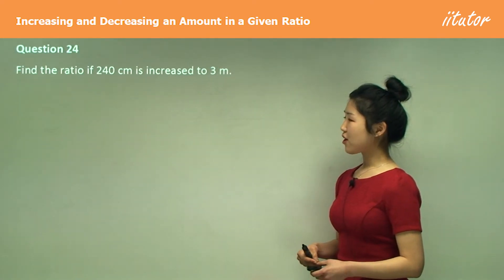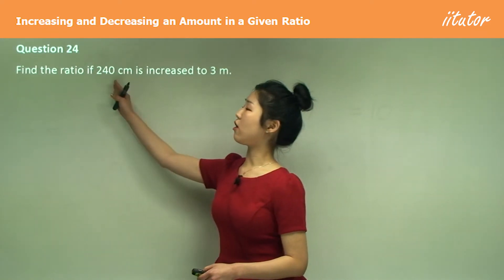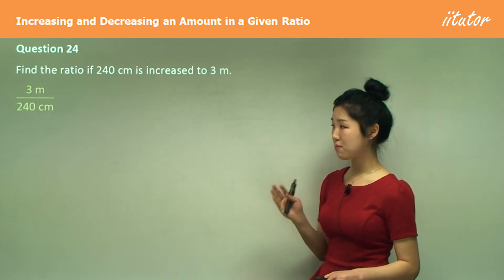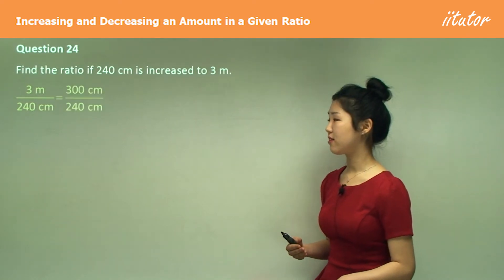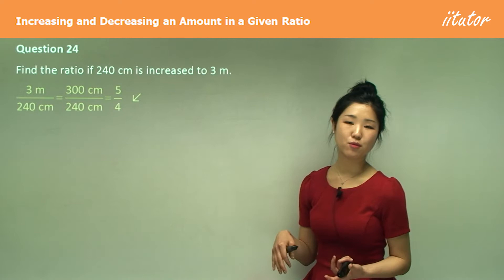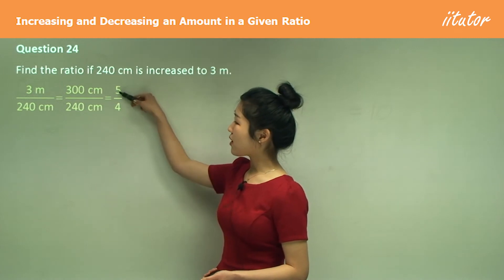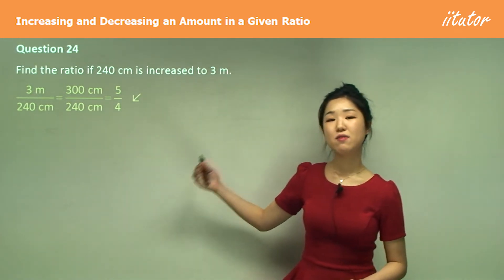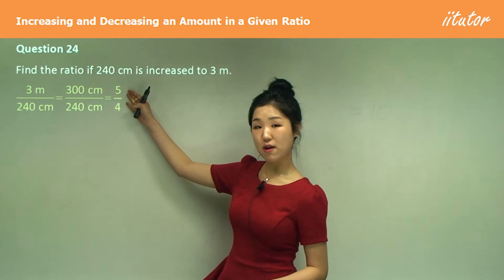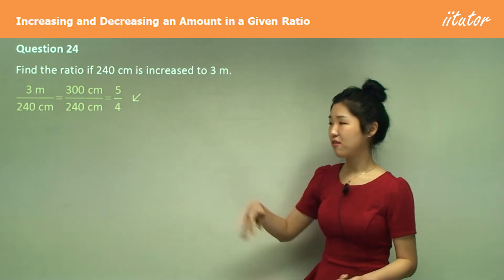Question 24: find the ratio if 240 centimeters is increased to 3 meters. New over old — we need to convert units, so change 3 meters to centimeters by multiplying by 100 to get 300 centimeters. Divide top and bottom by 60 to get 5 on 4. If it's increased, the numerator should be greater than the denominator; if decreasing, the numerator should be less. Here the numerator is greater, so it reflects an increasing situation.